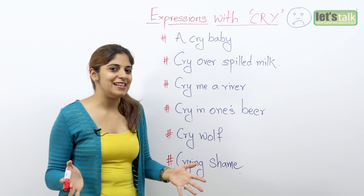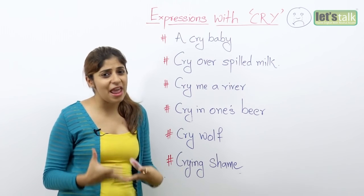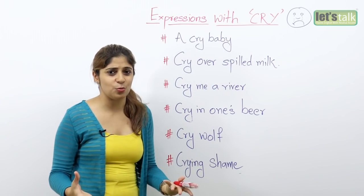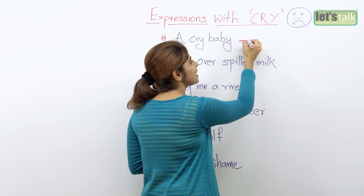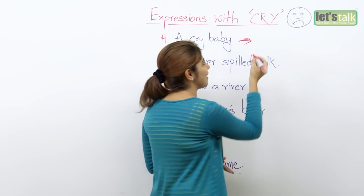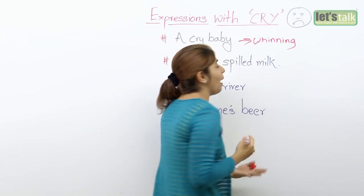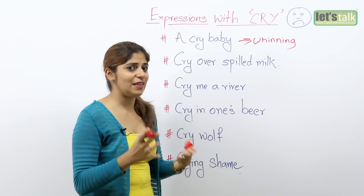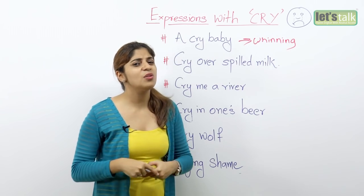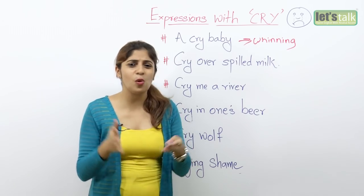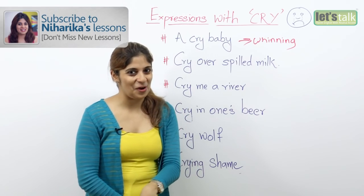But it's not just kids. I know adults who are always complaining and crying about everything, about every situation. So they are cry babies. Use this expression for someone who is always crying and whining about silly things. If you have a friend, you are gonna say, 'Oh, you are such a cry baby, look at you. You are always whining and complaining.' That's how you can use this expression.